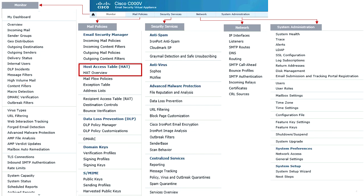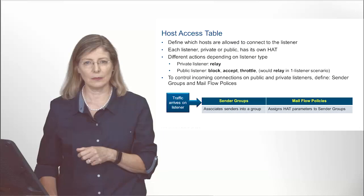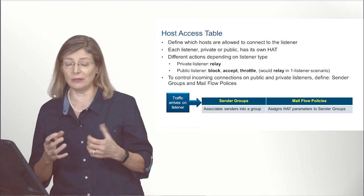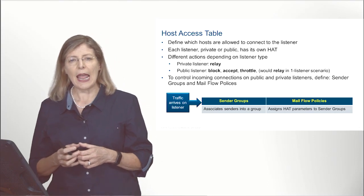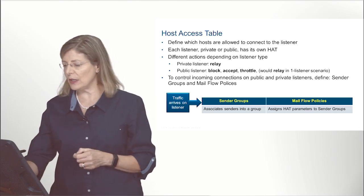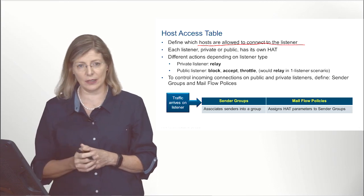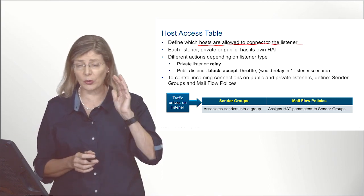The portion we want to tackle now is sender reputation, which happens right at the start of the connection. Where do we go to control which incoming TCP sessions we're accepting and how we deal with them? We will do that under the Mail Policy menu under HAT Overview. HAT stands for Host Access Table. The purpose of the Host Access Table is to define which hosts are allowed to connect on the listener.